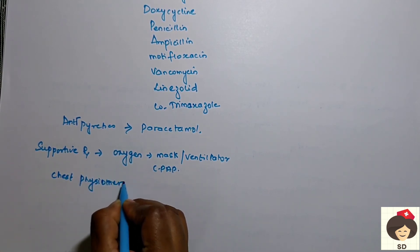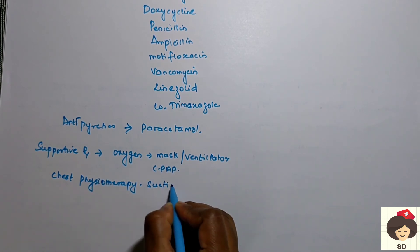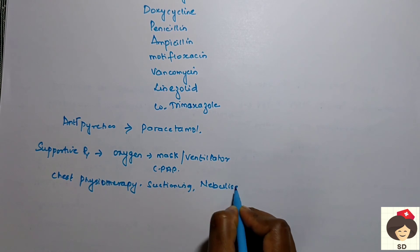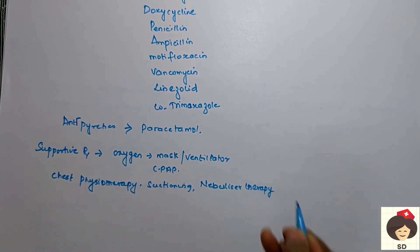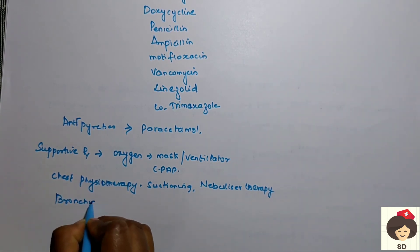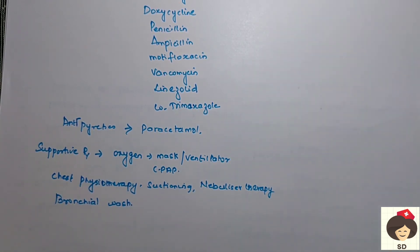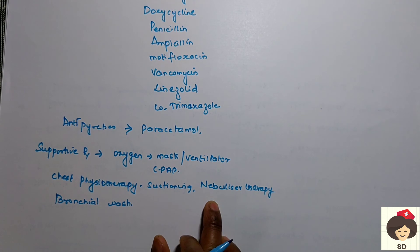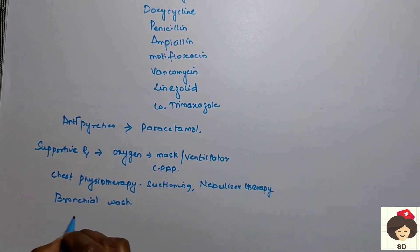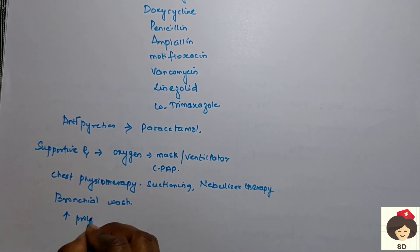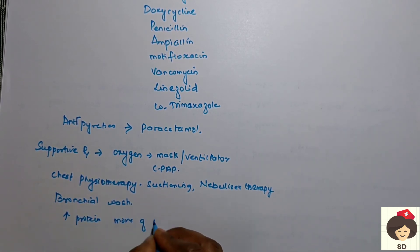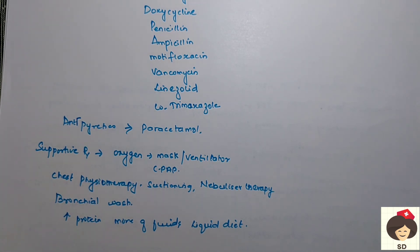Suctioning, nebulizer therapy, and in case of copious secretions or a tumor present inside the lungs, a bronchial wash can also be done — saline solution or antibiotic solution is used to wash the bronchus so any microorganisms can be removed. For nutrition, increased protein and more fluids — a liquid diet — are administered, because the patient cannot digest solid foods and due to bad taste will not feel like eating, so small fluid feeds are given.